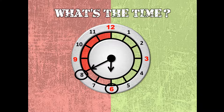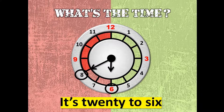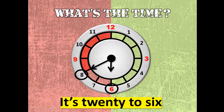How about this one? The time is: it's twenty to six. Why twenty to six? Because the remaining is five, ten, fifteen, twenty. From 8 to 9, you count five, ten, fifteen, twenty. So it means you still have twenty minutes more before the clock strikes six.